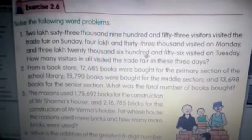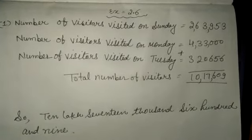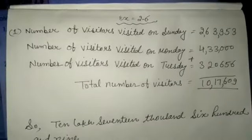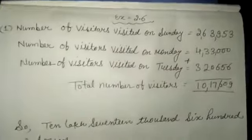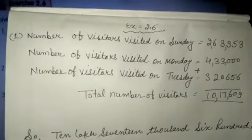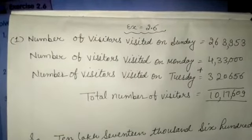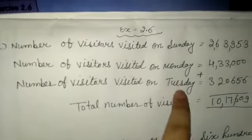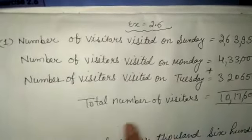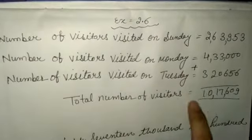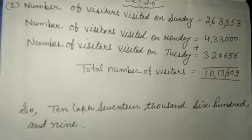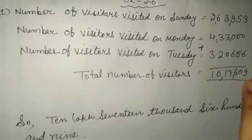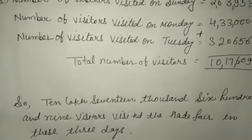This is Question 1 of Exercise 2.6. Number of visitors on Sunday: 2,63,953. As you can see, I have converted the word form into numeric form. Visitors on Monday and Tuesday are also written. I added these and got the answer. Remember, since the question was in word form, the answer should also be in word form: 10,17,609 visitors visited the trade fair in these three days.